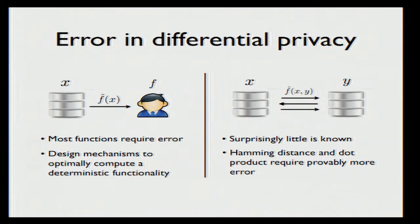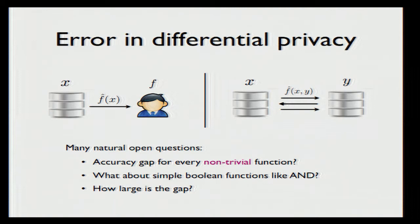This leaves many natural open questions. For example, can we prove that there is an accuracy gap for every non-trivial function? We don't know the answer even for simple Boolean functions such as computing the AND of two bits. And how large is this gap? How does it behave? Addressing these questions is the focus of our work.